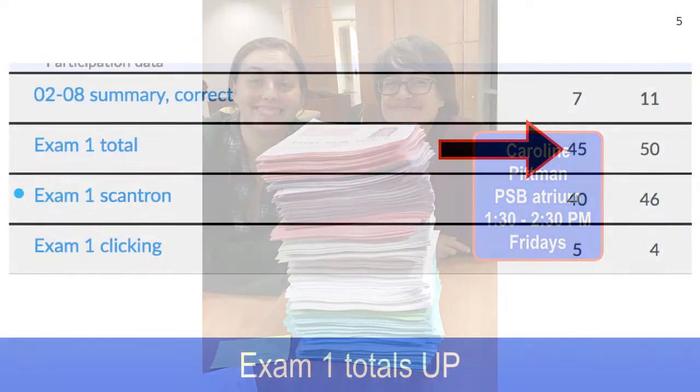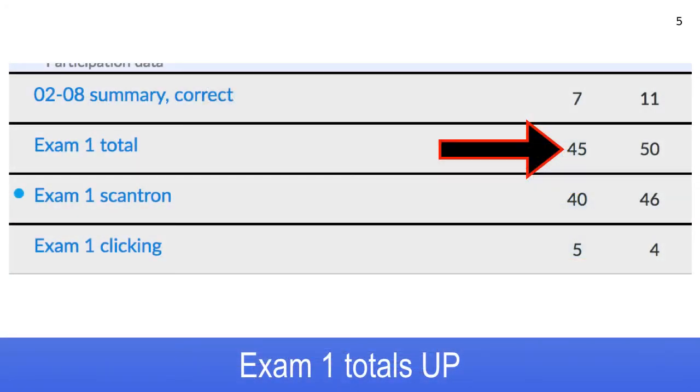I finally posted the exam one total. It wasn't any mystery, but now it's officially on the books in your grades page above the two separate constituent scores, exam one Scantron and exam one Clicking. They add up to exam one total, as shown here.